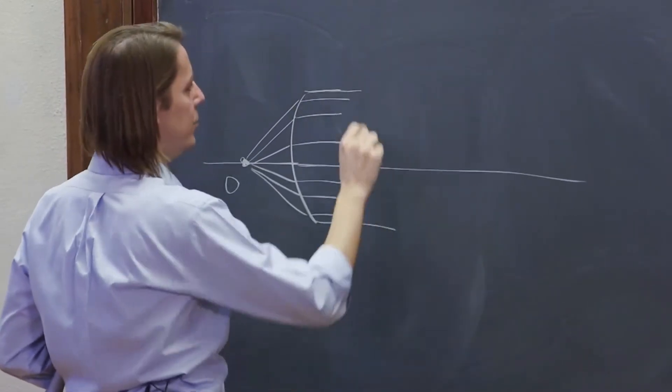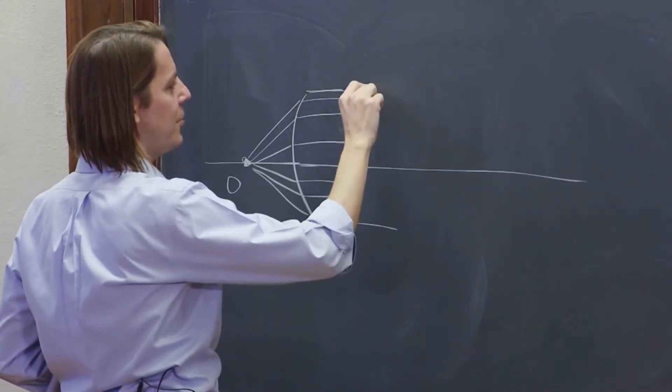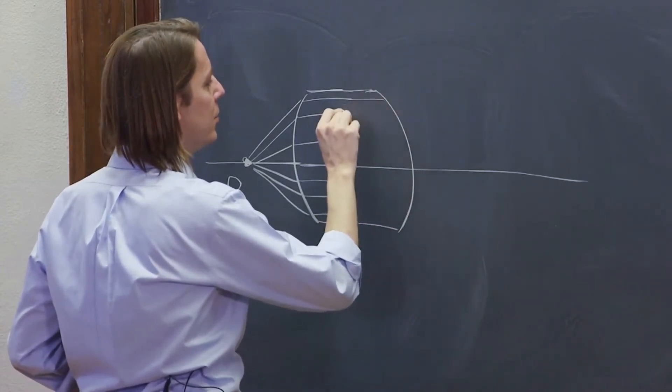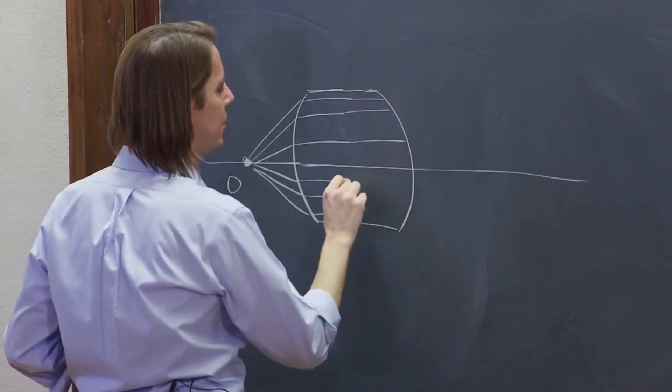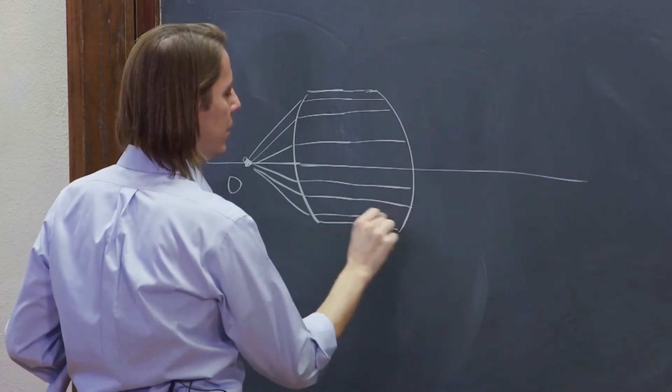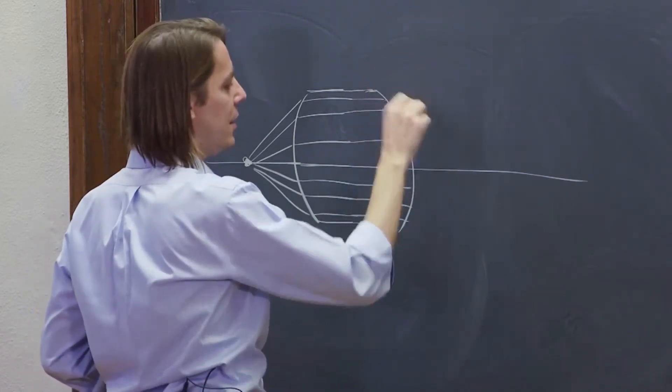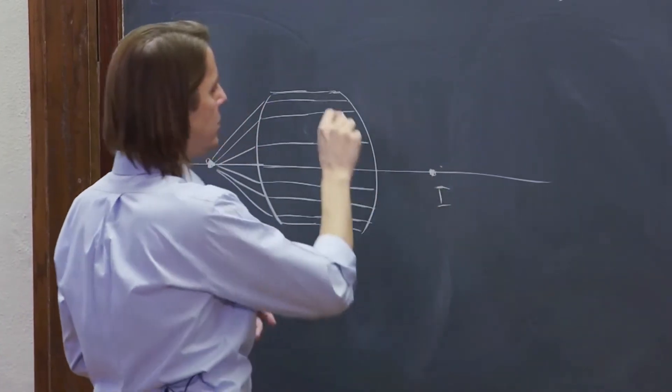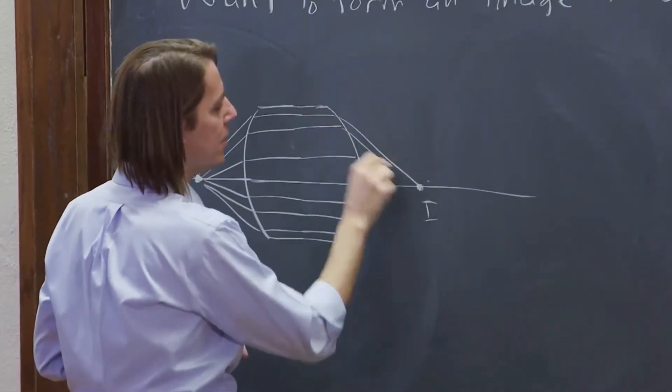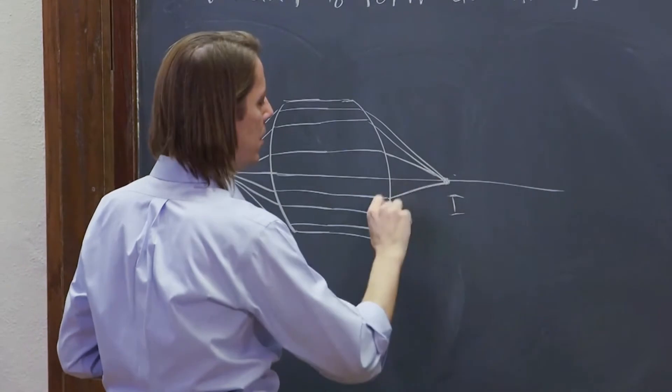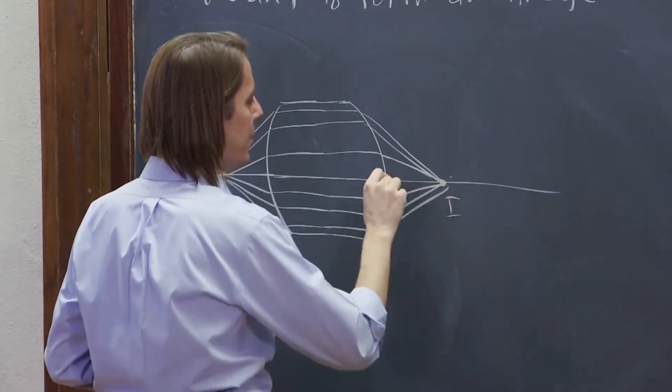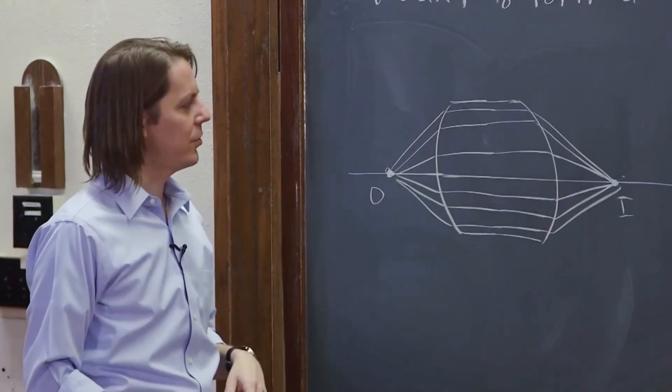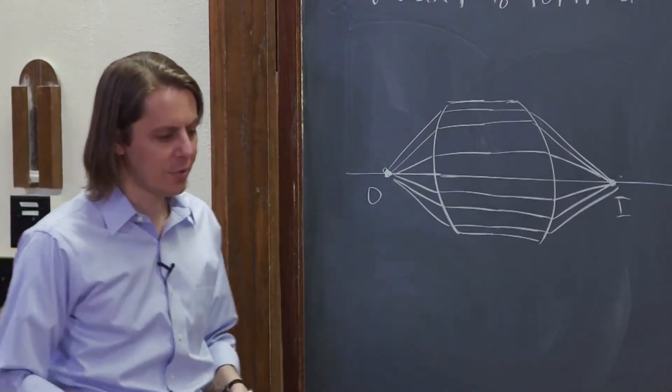And then what we'll do is put the exact same curvature on the back. So when these rays come here, they'll all refract again in a way that will bring them to the image point, like that. So we can make this happen in the air by relying on both the front surface and the back surface of the lens to have this property.